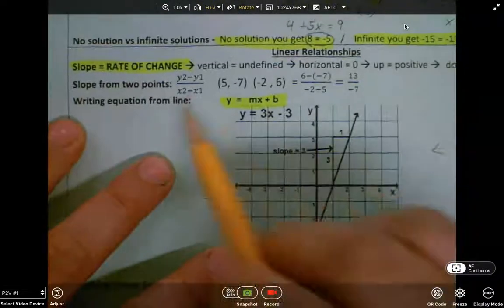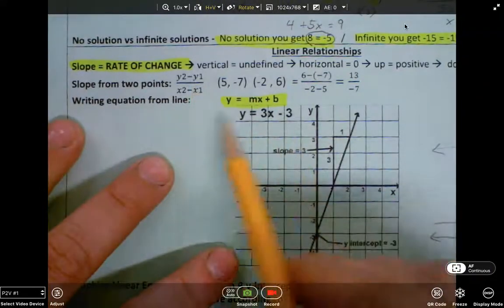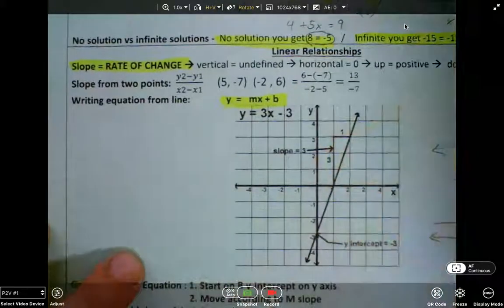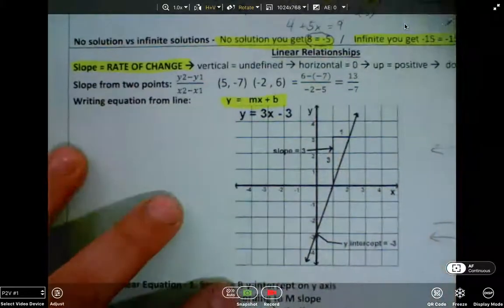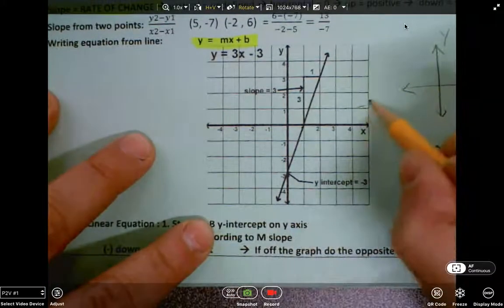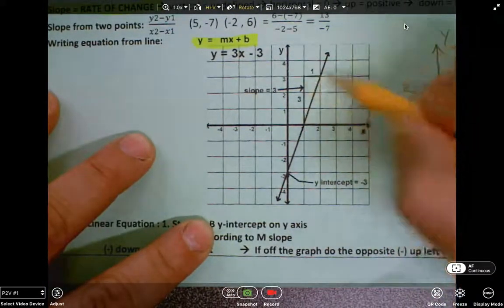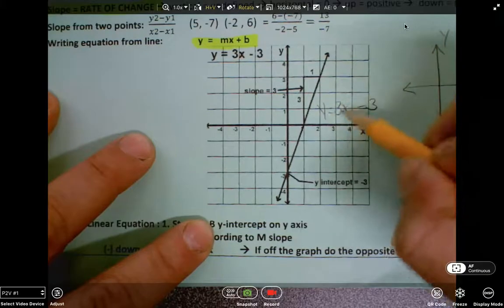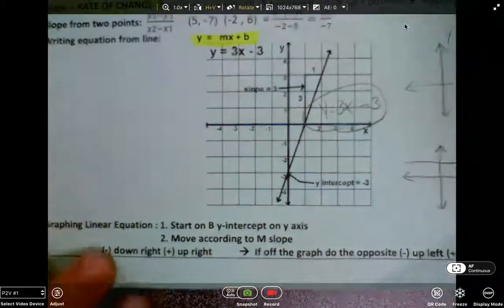To find slope from two points, we use this formula. We can write an equation from a line using our y equals mx plus b. We start at our y-intercept, which here is negative 3, and our slope is up 3 over 1, so it's y equals 3x minus 3 for this equation.